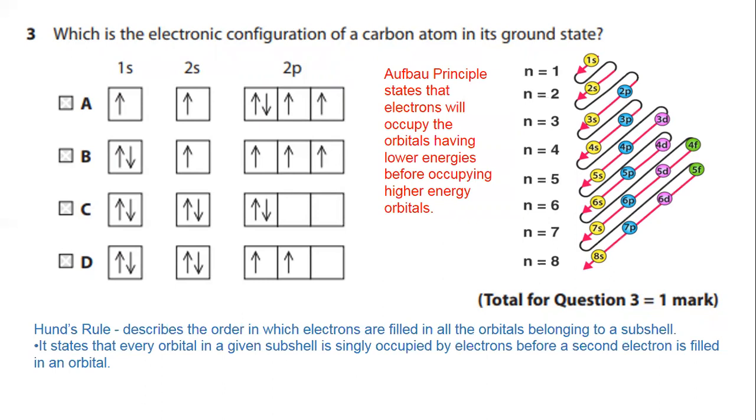According to Aufbau principle, we have to reject the A and B answers because in A, before filling 1S and 2S orbitals completely, it has started filling 2P. In B, before filling 2S, it has started filling 2P. So A and B is rejected. We are left with C and D.